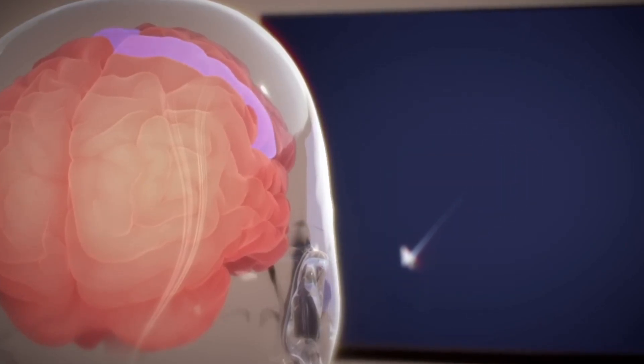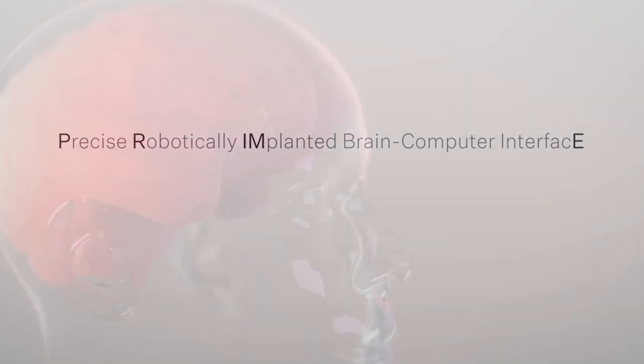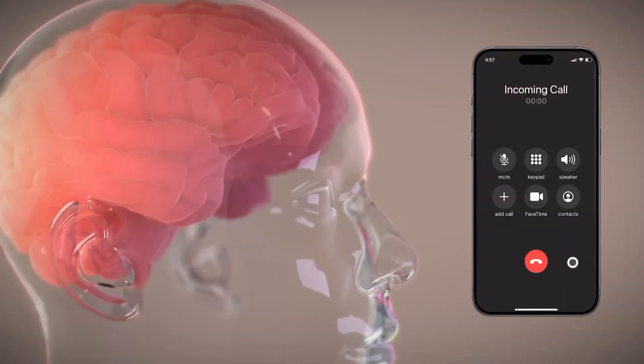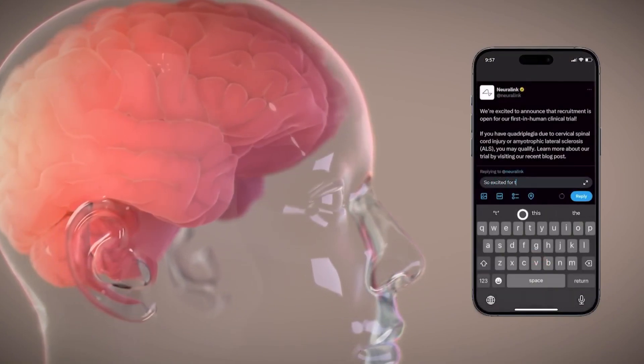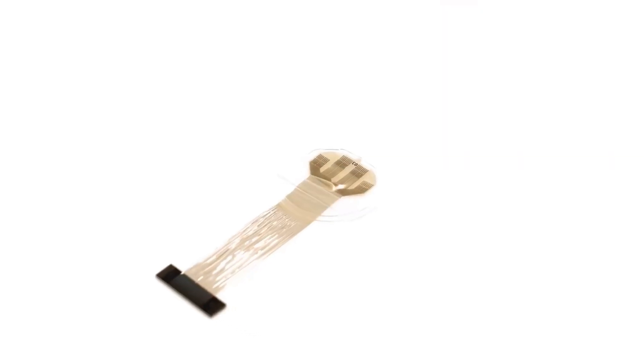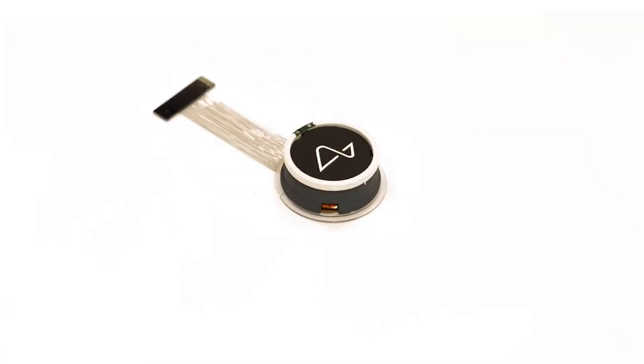This technology could be a game-changer for patients who are unable to move their bodies. In Neuralink's PRIME study, which stands for Precise Robotically Implanted Brain-Computer Interface, subjects undergo surgery to place the N1 device in the part of the brain that governs movement. The chip then records and processes the brain's electrical activity and transmits this data to an external device such as a smartphone or computer.